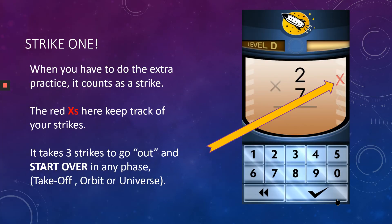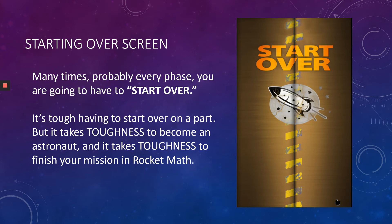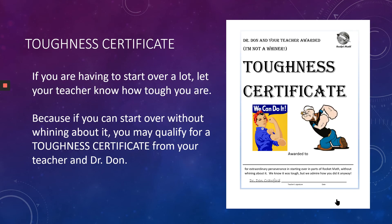That's strike one. When you have to do that extra practice, it counts as a strike — the red X tracks your strikes. It takes three strikes to go out and start over in any phase: takeoff, orbit, or universe. Many times — probably every phase — you're going to have to start over a few times. It takes toughness to become an astronaut, and it takes toughness to finish your mission in Rocket Math. There is a toughness certificate — if you're having to start over a lot, let your teacher know, because if you can start over without whining, you may qualify for a toughness certificate from your teacher and Dr. Don.